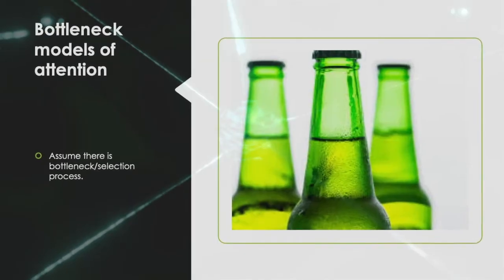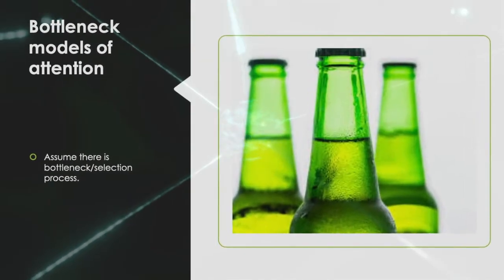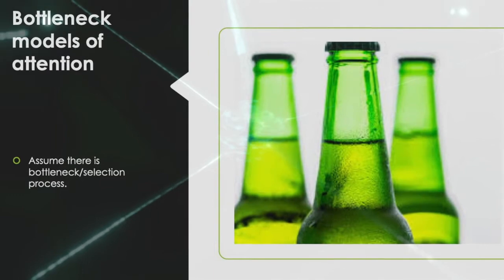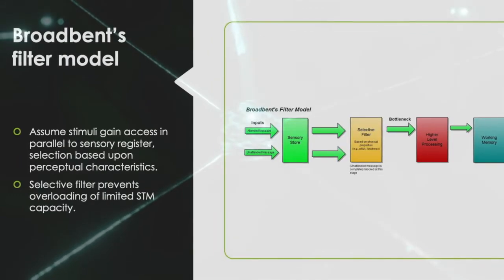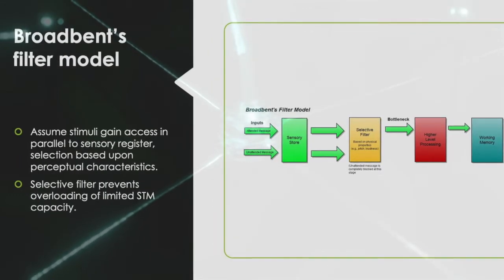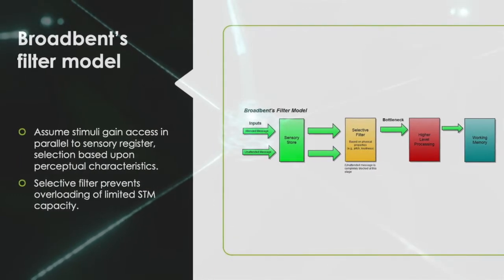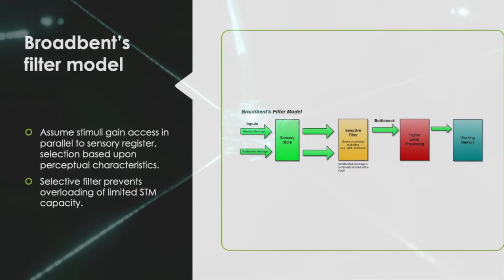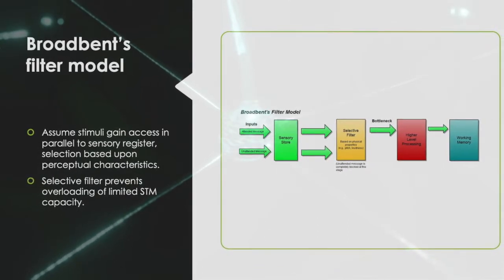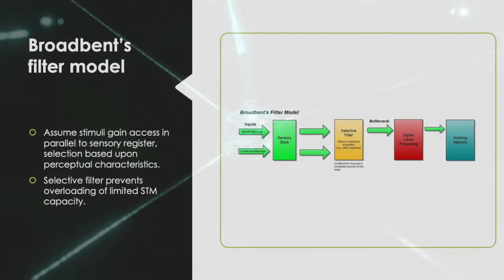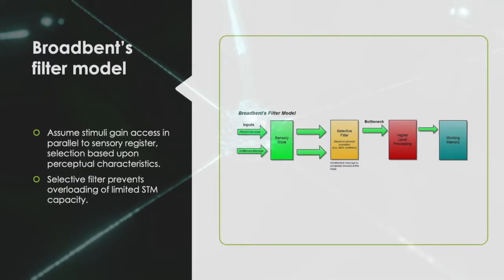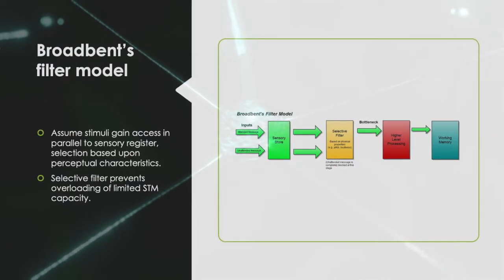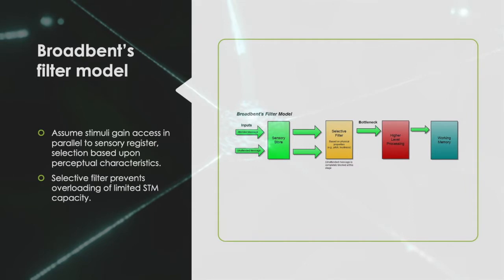Bottleneck models of attention assume that there is a bottleneck or selection process. Broadbent's filter model assumes that stimuli gain access in parallel to a sensory register selection, which is based upon perceptual characteristics. There is a selective filter that prevents overloading of the limited short-term memory capacity.